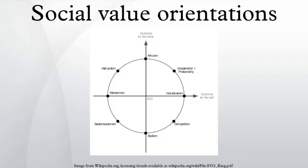The vertical axis measures the amount of points or money allocated to the other and the horizontal axis measures the amount allocated to the self. Each pair of outcomes corresponds to two adjacent points on the circle.